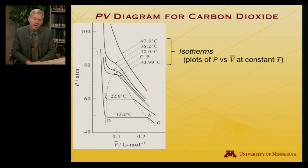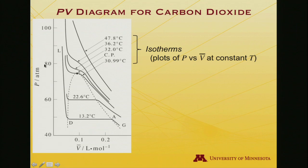Let's take a look at gas-liquid PV diagrams. I'll start with a PV diagram for carbon dioxide. A PV diagram is a plot of pressure in units of atmospheres on the y-axis and molar volume in liters per mole on the x-axis. Shown on the plot are isotherms—plots of P versus V-bar at constant temperature.